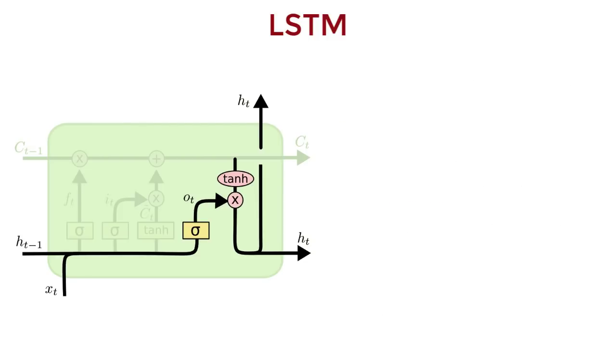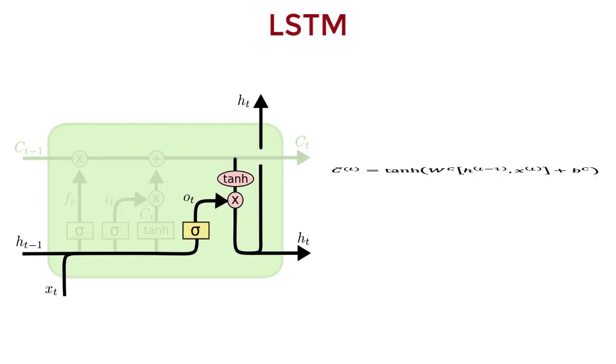Apart from these gates, we have another vector, C bar, that modifies the cell state. It has the tanh activation.